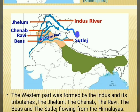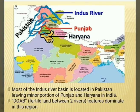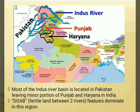The western part was formed by the Indus and its tributaries — the Jhelum, the Chenab, the Ravi, the Beas and the Sutlej — flowing from the Himalayas. Most of the Indus River Basin is located in Pakistan, leaving a minor portion of Punjab and Haryana in India. Doab features dominate in this region. Doab means a fertile land between two rivers.